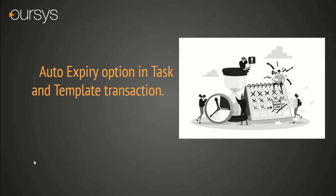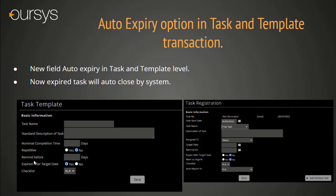Auto Expiry option in Task and Template Transaction. This is a very important and useful feature introduced at task template and task creation level. A new field is introduced as 'Expiry after Target Date' with a Yes or No option. If the user selects Yes, system will automatically close the task after the completion of the target date. It helps remove all completed or incomplete tasks from the pending list. If the user forgot to mark completion, system will automatically close it based on the target date expiry.